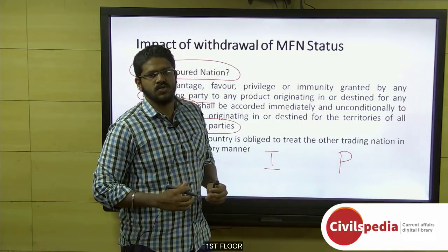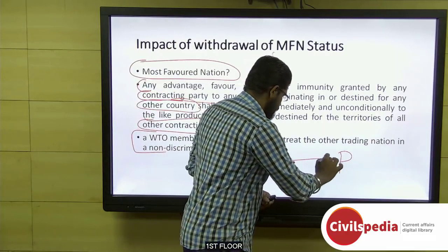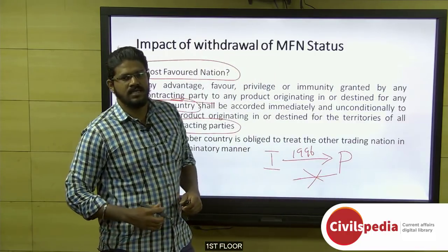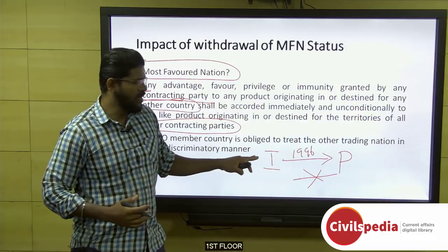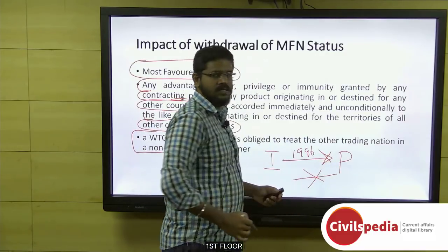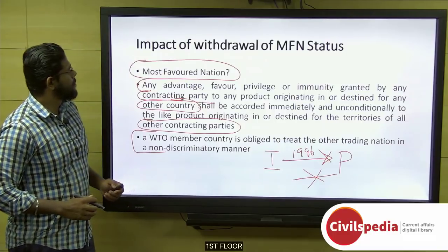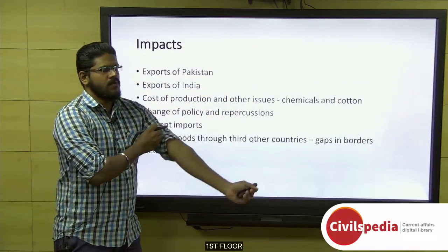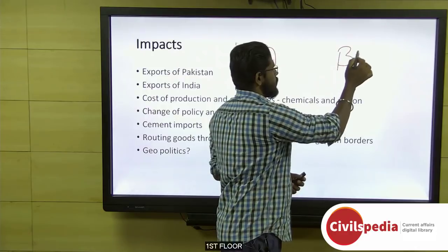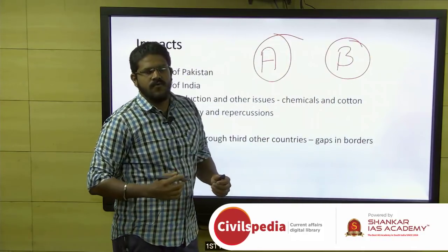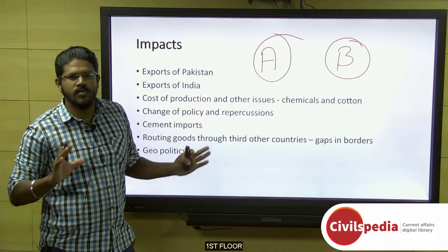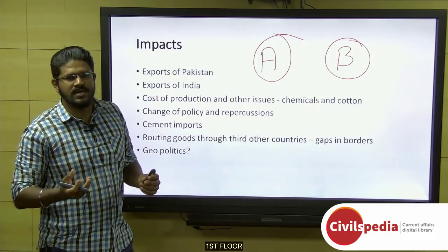India accorded the MFN status to Pakistan as far back as 1996, but Pakistan has not reciprocated this privilege to India even until now. Very recently, after the terrorist attack, India withdrew this MFN status to Pakistan. When country A accords MFN status to country B, the burden on country B related to import and exports to and from country A is reduced — lower import duties and fewer trade barriers.